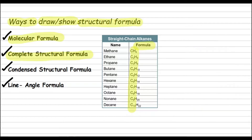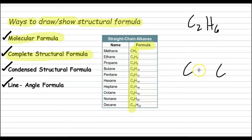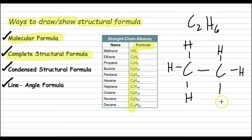How about ethane, with two carbons and six hydrogens? The first bond is between the two carbons. Looking at the first carbon — since it's already bonded with another carbon, it can still accommodate three more hydrogens. The same with the second carbon — we need three more hydrogens. And that is the complete structural formula of ethane.